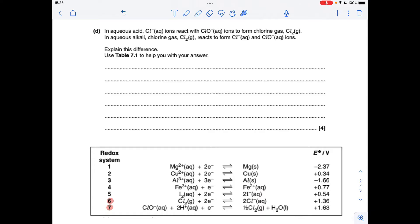Part D, now I've just copied the table and put it at the bottom there to save me going backwards and forwards. We're using the electrode potential values to explain these two different reactions. First of all, in aqueous acid chloride ions react with CLO minus ions to form chlorine gas, obviously dealing with these two redox systems. If we have a look at the electrode potential values, we've got 1.63 versus 1.36, so what's going to happen here is the CLO minus ions are going to take electrons from the chloride ions and obviously generate chlorine gas in the process. So this half equation is going to run left to right and this one's going to run from right to left.